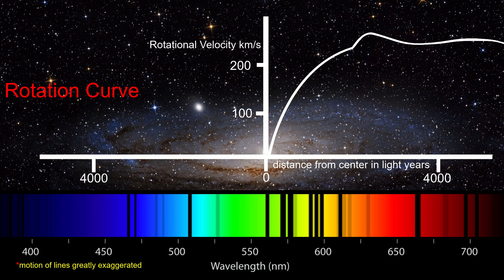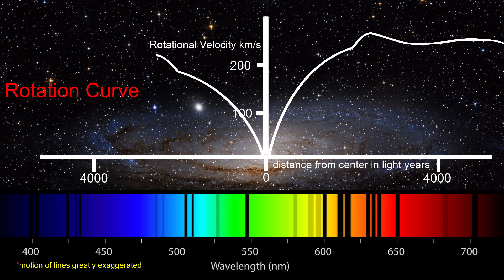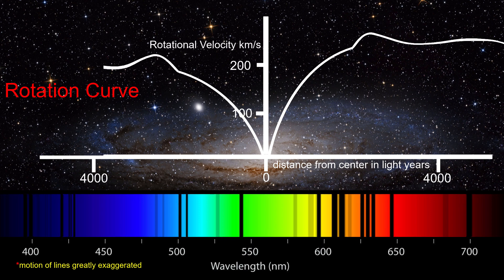We then do the same thing from the center, but move to the opposite edge. We then take the absolute average of the two rotation curves.